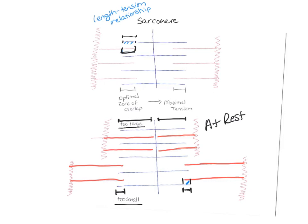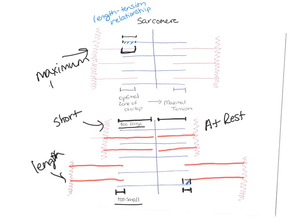Either way, there will be less tension produced if at rest your zone of overlap is too large or too small. If the muscle length is too large, you'll have a small overlap and less tension. If your muscle length is too short at rest, you'll have too large of an overlap and won't have as much tension. But if there is an optimal zone of overlap, then maximum tension can be produced. In summary, skeletal muscles contract more forcefully when they are in their optimal resting lengths.